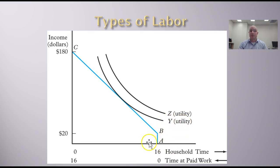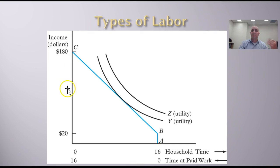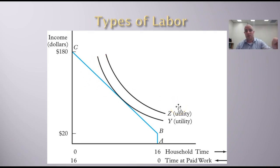In this example, we have $20 of non-labor income. If you do the math for each hour and you have 16 hours in the day, we go from 20 to 180, so it goes up by 160. The hourly wage, if you did the calculations, would be $10 an hour. Based on our previous discussions, you would see that this worker would choose the point where he or she maximizes utility.